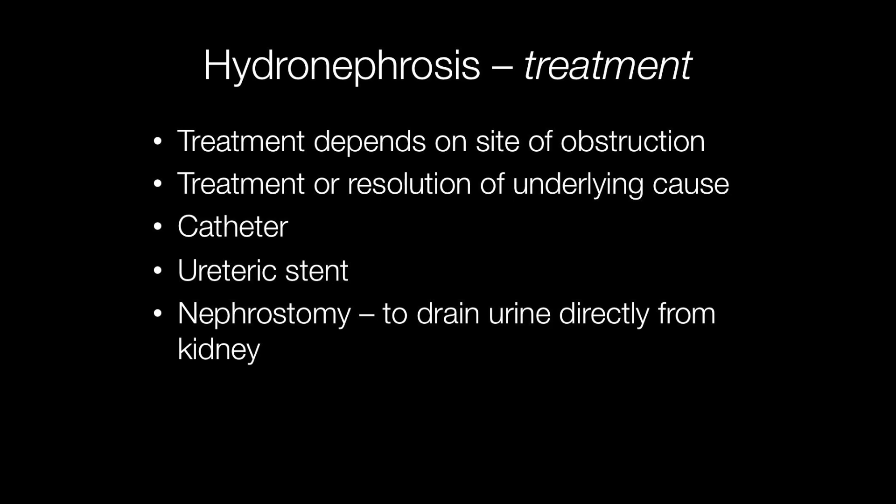Sometimes it is necessary to use a catheter or a ureteric stent to allow the urinary outflow obstruction to be relieved. In more serious cases of hydronephrosis, a nephrostomy may be required, where a tube is inserted directly into the renal pelvis allowing the urine to flow through a tube into a bag on the outside of the body.